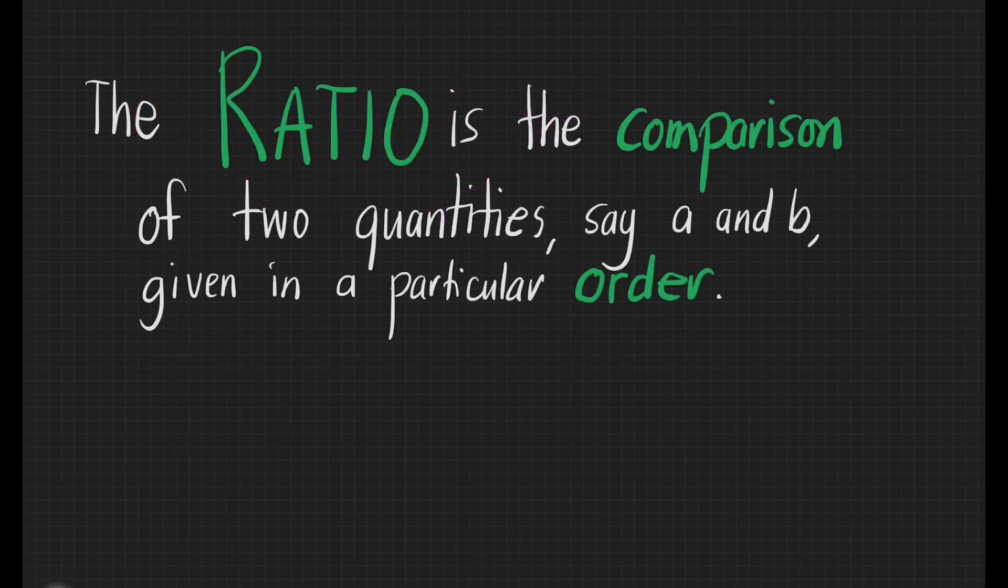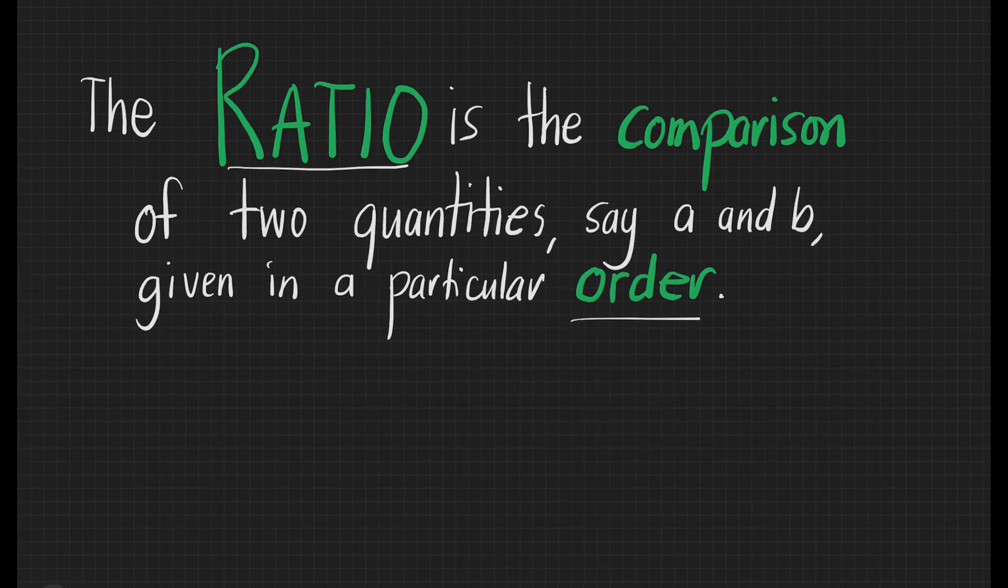We have to note that the ratio is the comparison of 2 quantities, say A and B, given in a particular order. The ratio is written as A is to B, where the symbol is read as is to.